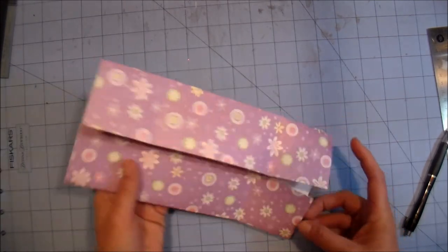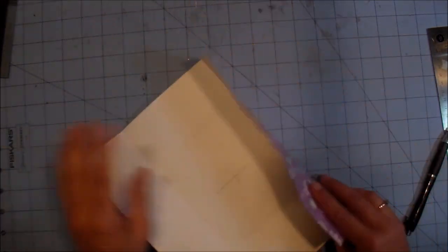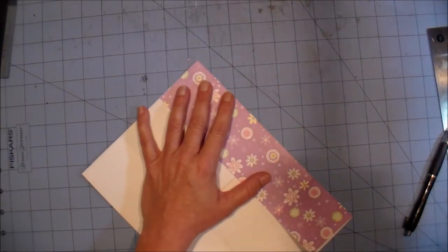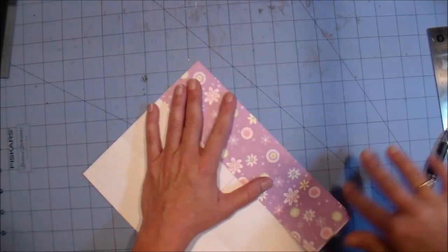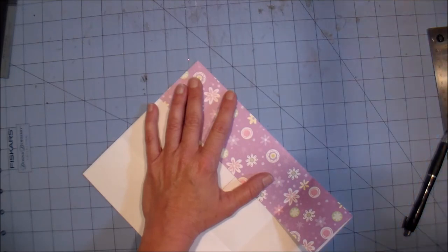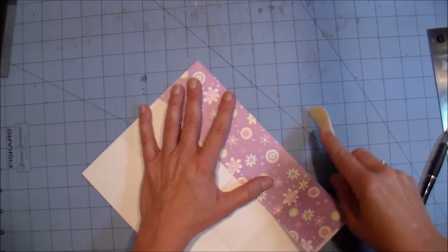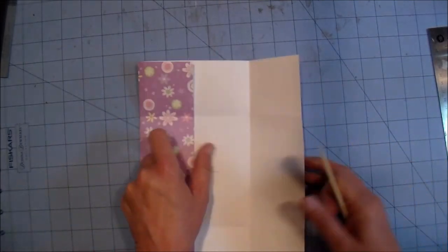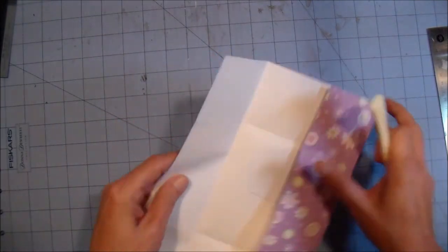Here's your score lines and of course you'd probably want to use your bone folder to crease those. I can't find mine. Well here's one, this isn't the one I usually use but that's okay it'll work. So make sure those are nice and creased.